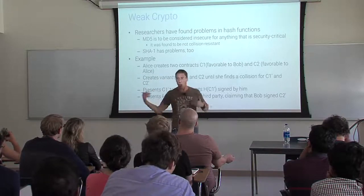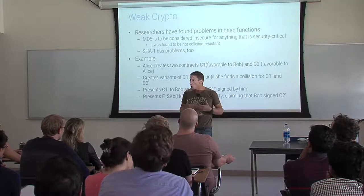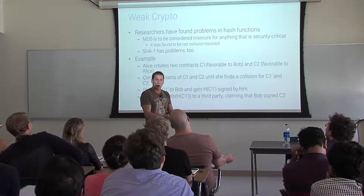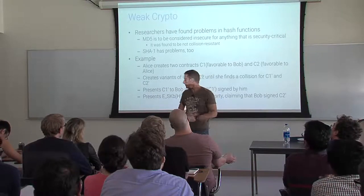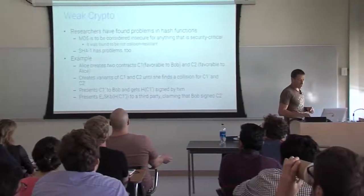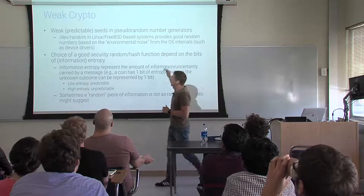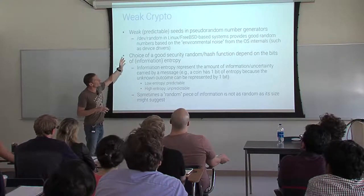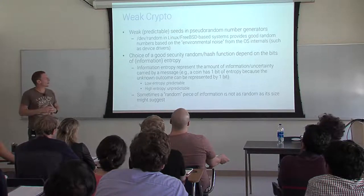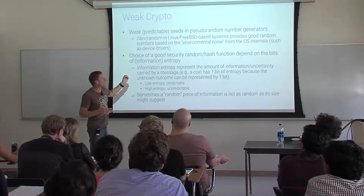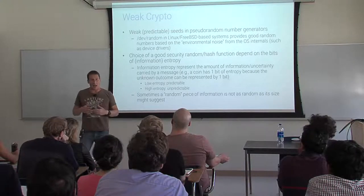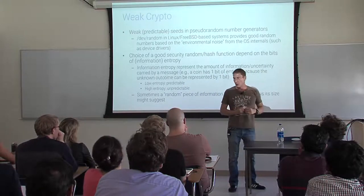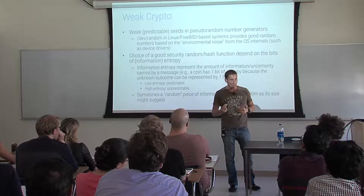There are also problems with predictable pseudo-randomness. If you use a bad random function, you might end up with a bad random series of numbers. If you seed a pseudo-random generation algorithm with a predictable seed, you can predict the whole sequence. Pseudo-random number generators take a seed — you set a seed, say 55, and if you start from 55, the sequence will always be the same. They look random but are always the same, which is great for testing. But if someone can guess your seed, your randomness is gone — it becomes predictable.